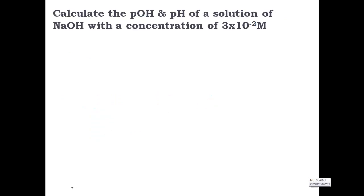All right, let's calculate the pOH and the pH of a solution of NaOH with a concentration of 3 times 10 to the negative second. All right, dudes, let's wrap our brains around this one. Get a calculator out and why don't you try to start solving this problem.